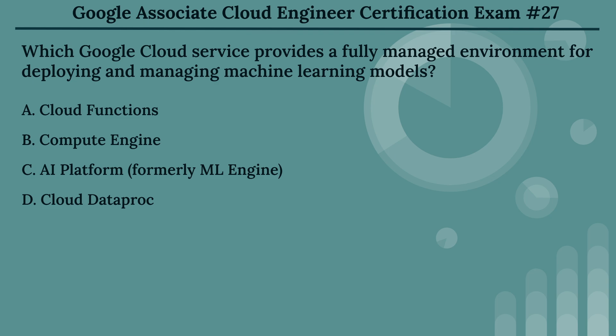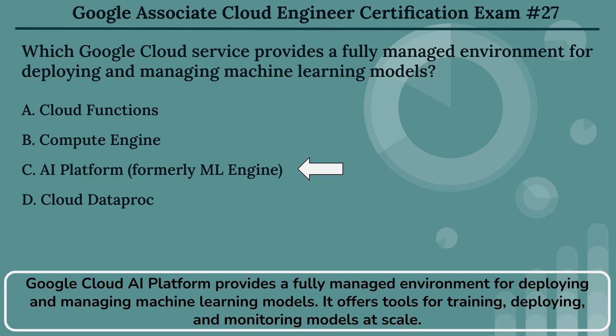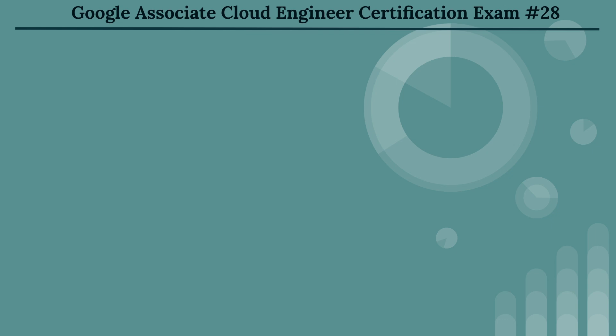The right answer is Option C: AI Platform, formerly ML Engine. Google Cloud AI Platform provides a fully managed environment for deploying and managing machine learning models. It offers tools for training, deploying, and monitoring models at scale.